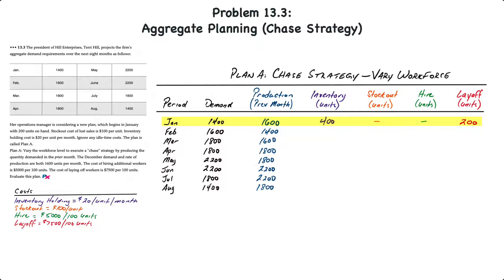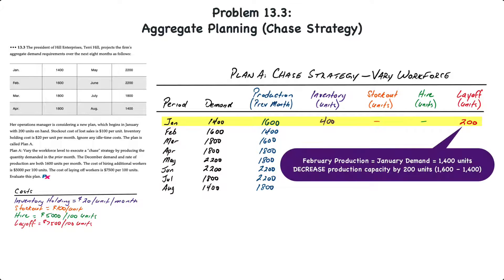Next, we determine if there is any hiring or laying off, which depends on what next month's production will be. February's production is based on January's demand of 1,400 units, so February's production will be 1,400 units. Since we currently produce 1,600 units in January but will only produce 1,400 in February, that's a reduction in capacity. We lay off staff at the end of January — equivalent to 200 units, or two employees — and that is when the cost is incurred.